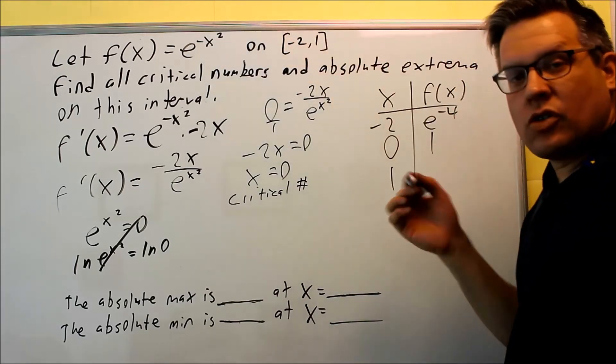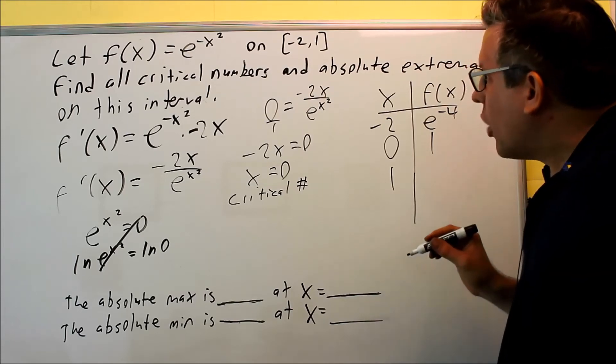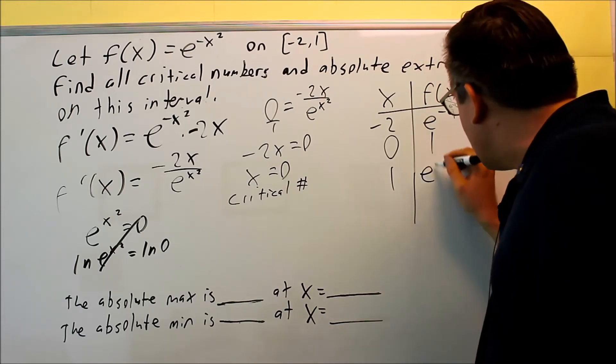If I put a zero, e to the zero is always going to be 1. And if I put 1 in there, then I'm going to get e to negative 1.